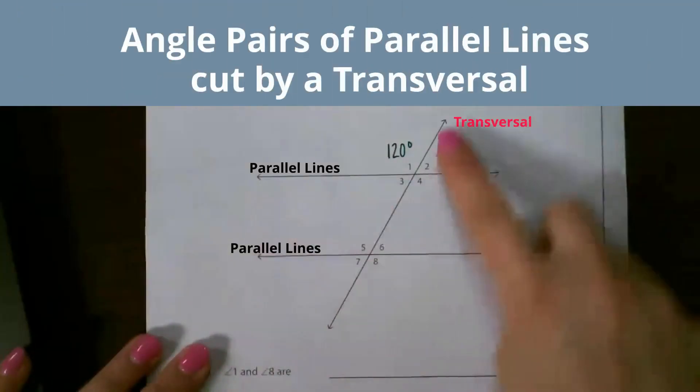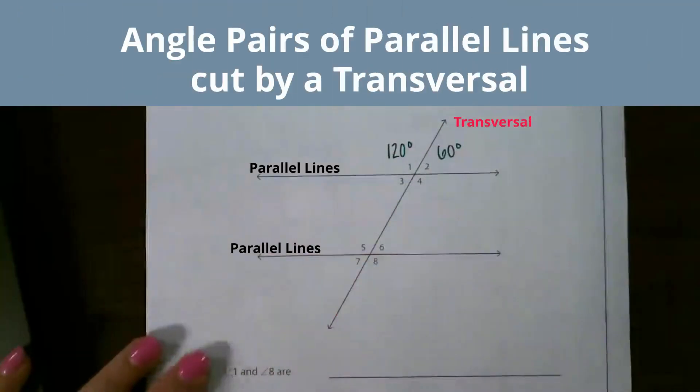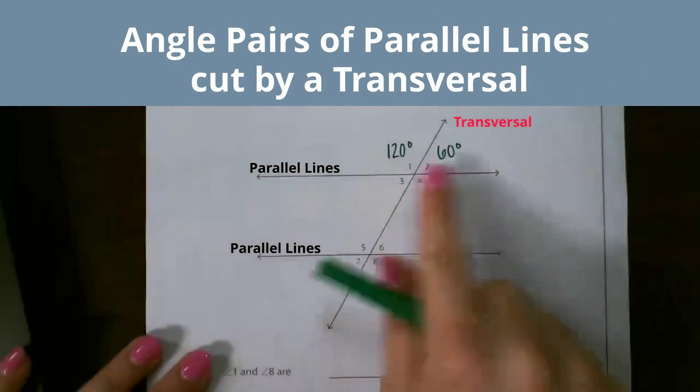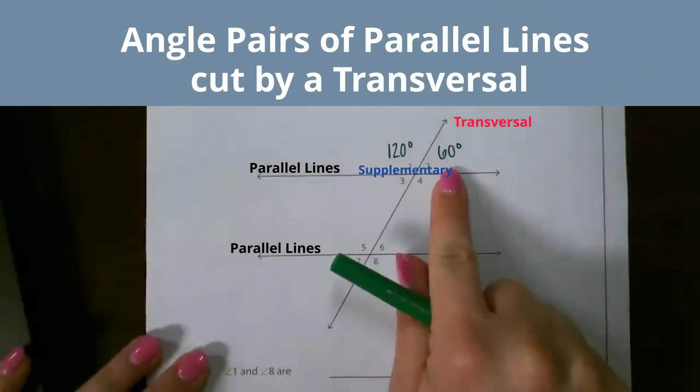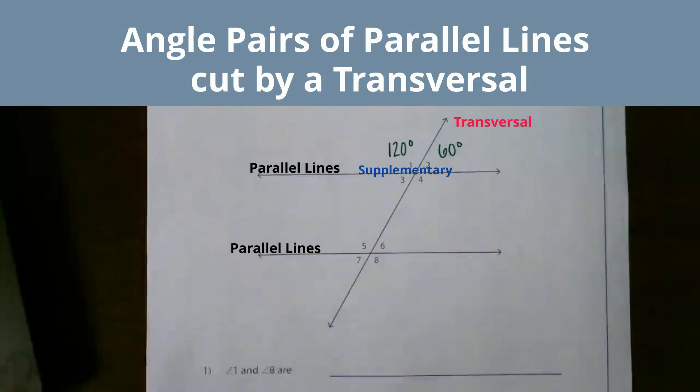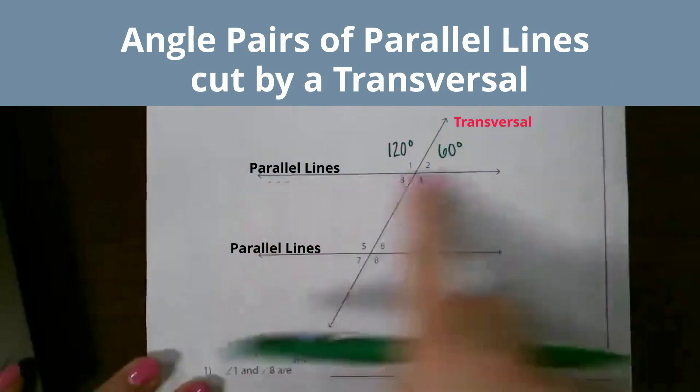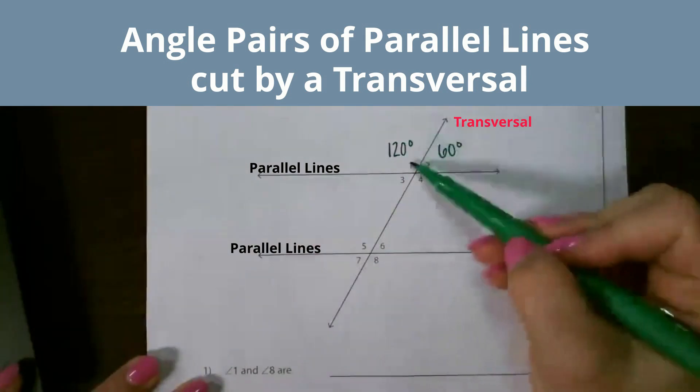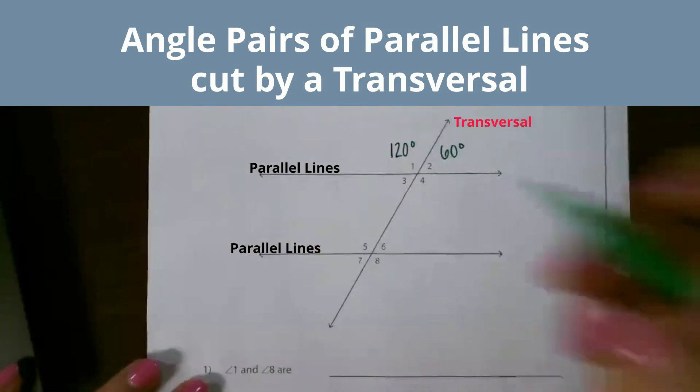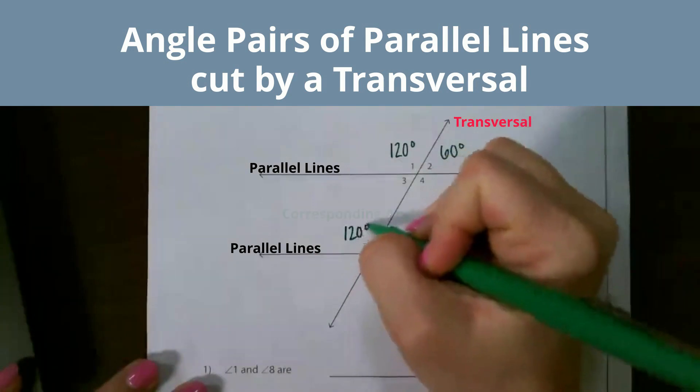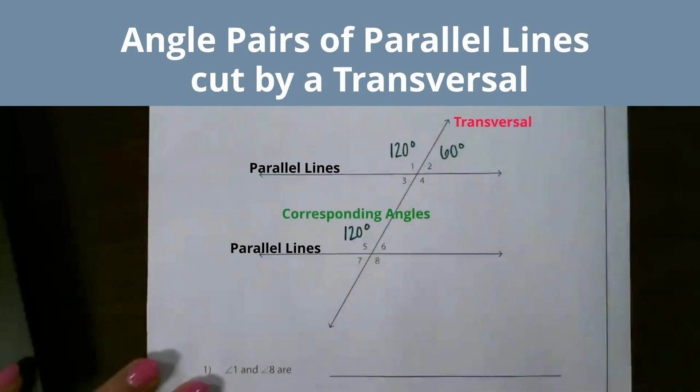Let's look at parallel lines cut by a transversal line. Remember, angle 1 and angle 2 are supplementary, which means they have to add up to 180. So let's talk about corresponding angles. Since these are parallel, angle 1 and angle 5 are going to be congruent. These are called corresponding angles—they're going to be the exact same measure. This also means that 2 and 6 are congruent because they are corresponding angles.